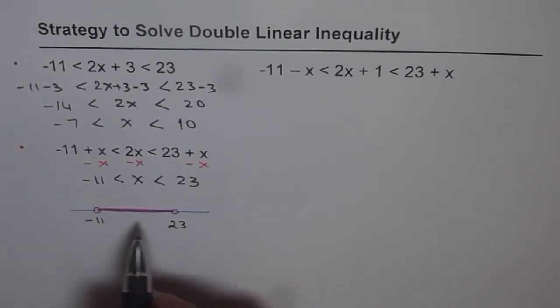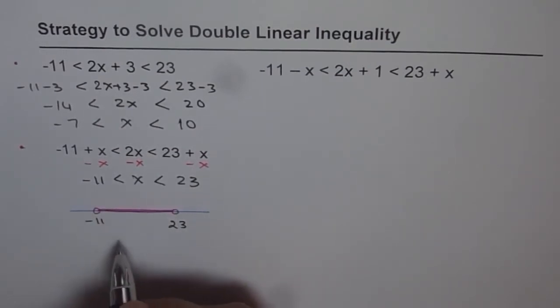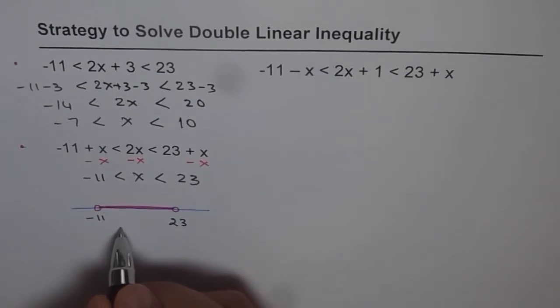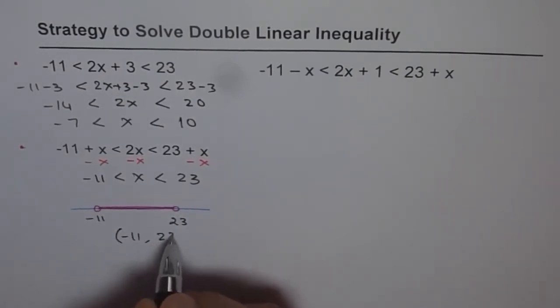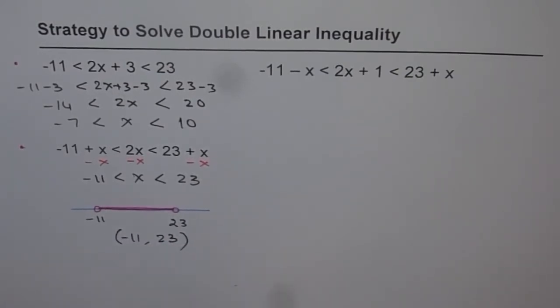Another way of writing the solution could be in bracket form: minus 11 to 23. This is another way of writing the same solution.